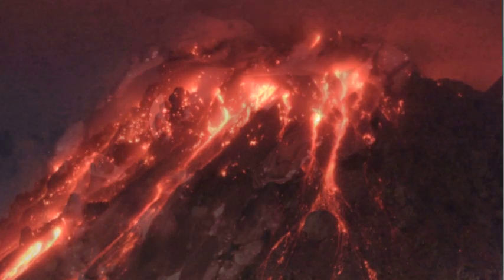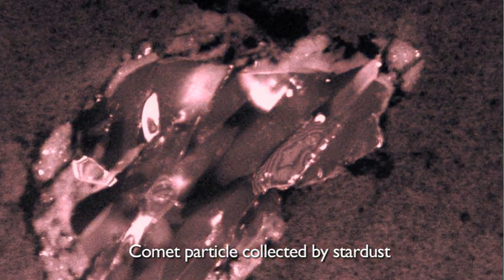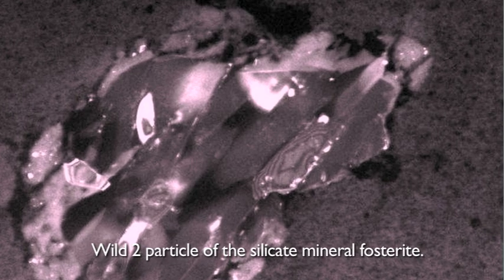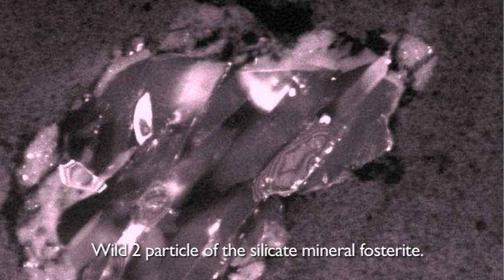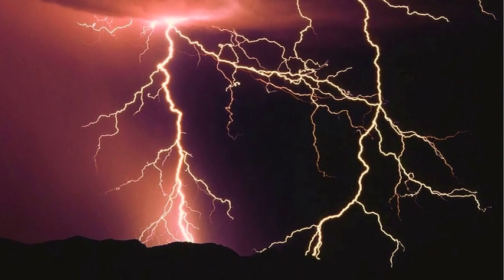Perhaps the biggest surprise was that some of the comet minerals, such as forsterite, in the instant of their formation were heated to thousands of degrees. Forsterite is formed in the most intense volcanic heating of silicates, but occurs also in lightning strikes to silicate rocks.